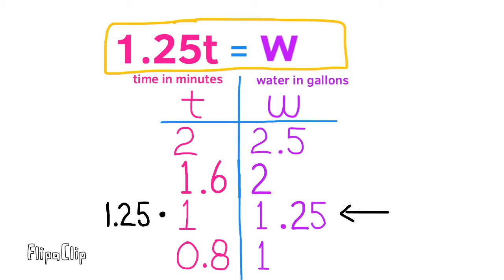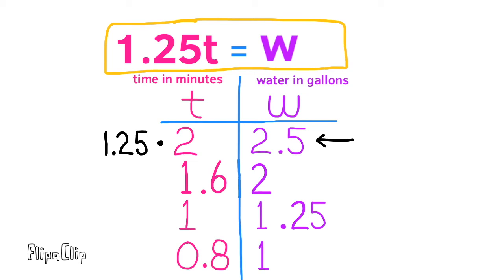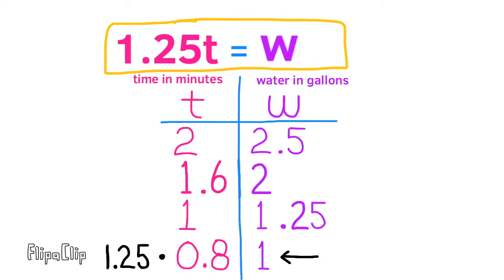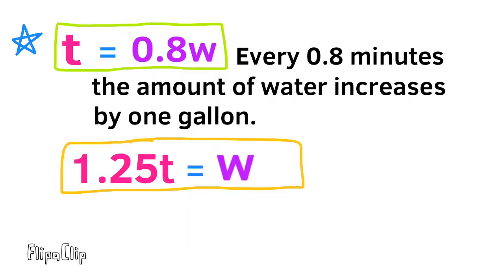Let's try two minutes: 2 × 1.25 = 2.5 gallons collecting in the tub. Let's try 1.6 minutes: 1.6 × 1.25 = 2 gallons collecting in the tub. Let's try 0.8 minutes: 0.8 × 1.25 = 1 gallon of water collecting in the tub.